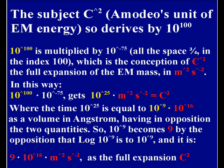The subject is C², the Amodeo's unit of the electromagnetic energy. So it derives by the absolute power 10 rise to 100. 10 rise to 100 is multiplied by 10 rise to minus 75.